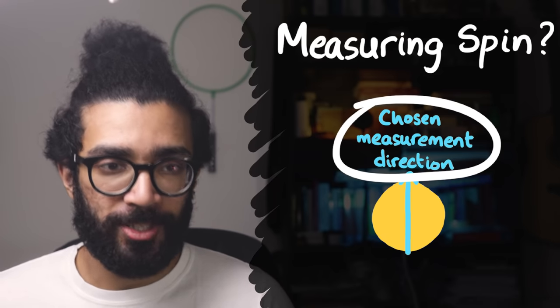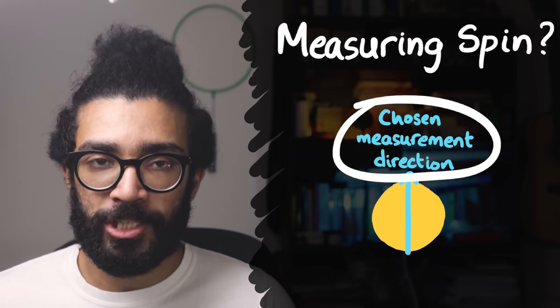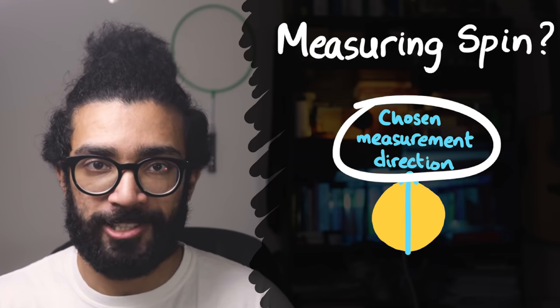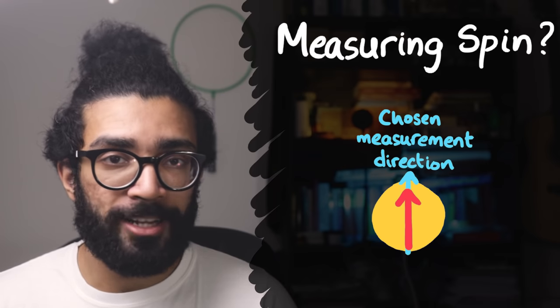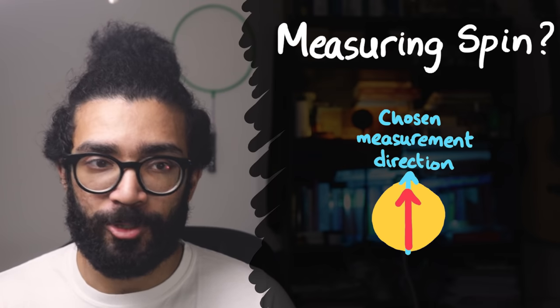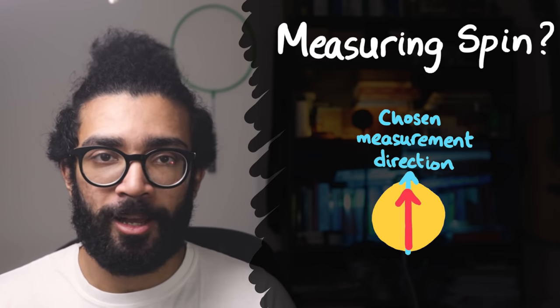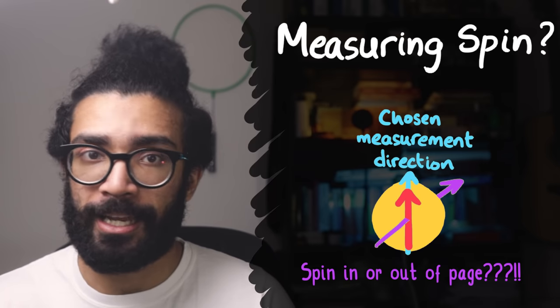According to Heisenberg's uncertainty principle, if we know something about the spin in a particular direction, then we absolutely cannot know anything about the spin in any perpendicular direction. As soon as we make a spin measurement in our chosen direction, our electron's wave function collapses so that we have information about which way the spin is pointing, either up or down, but we know nothing about whether the spin is pointing left and right or in and out of the page.